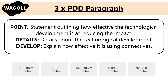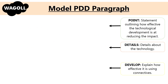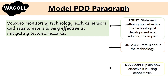After the introduction there should be three Point-Detail-Developed paragraphs, otherwise known as PDD paragraphs. Each paragraph should start with a point, which is a statement outlining how effective the technology is at reducing the impact. We can use the effectiveness scale from extremely effective to not at all effective to help us write our point. For instance, taking volcano monitoring technology as a focus, the point is: volcano monitoring technology such as sensors and seismometers is very effective at mitigating tectonic hazards.